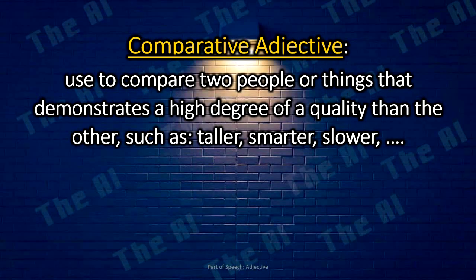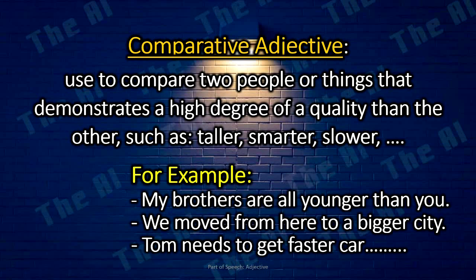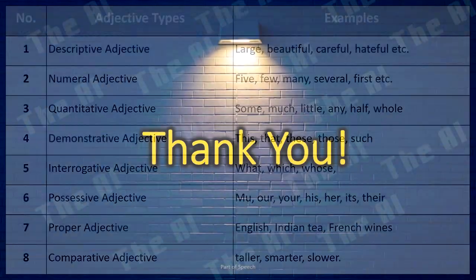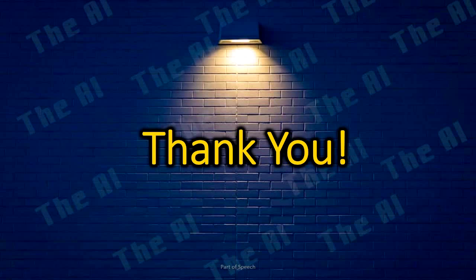A comparative adjective is an adjective used to compare two people or things, demonstrating a higher degree of a quality than the other, such as taller, smarter, slower, etc. For example: My brothers are all younger than you. We moved from here to a bigger city. Tom needs to get a faster car for the race. Now we have finished our lesson about adjectives. The table below will tell you briefly about the types of adjectives. If you have any questions, please leave your comments in the comments section below. Thanks.